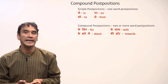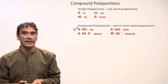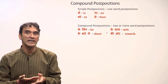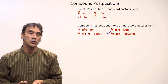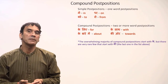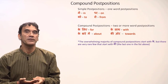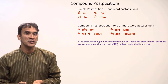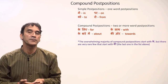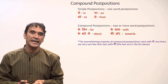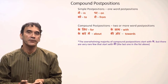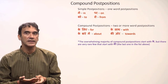For example: ke liye (for), ke saath (with), ke baare mein (about), ki (or two words). The overwhelming majority of the compound postpositions start with ke — that means the first word of the postposition is ke. But there are a rare few that start with ki.